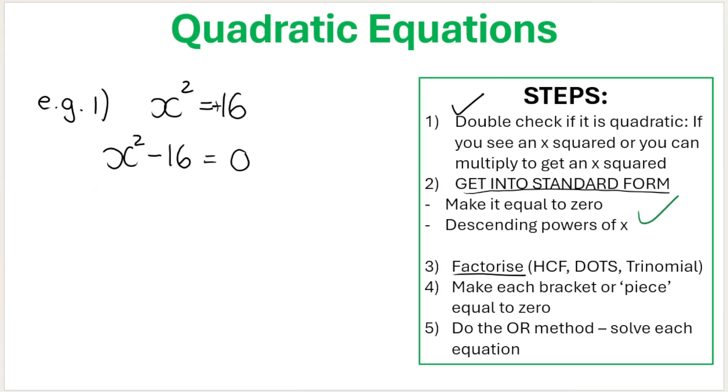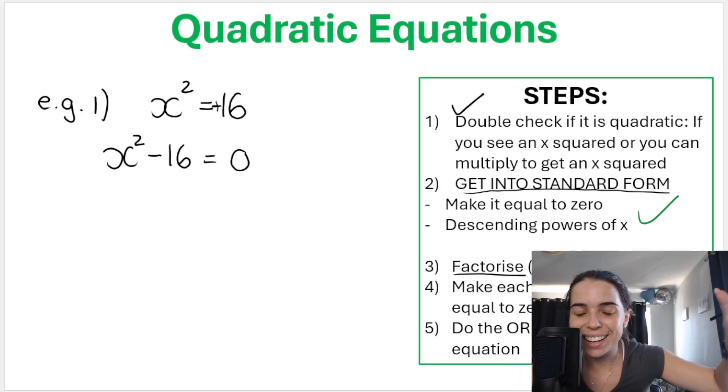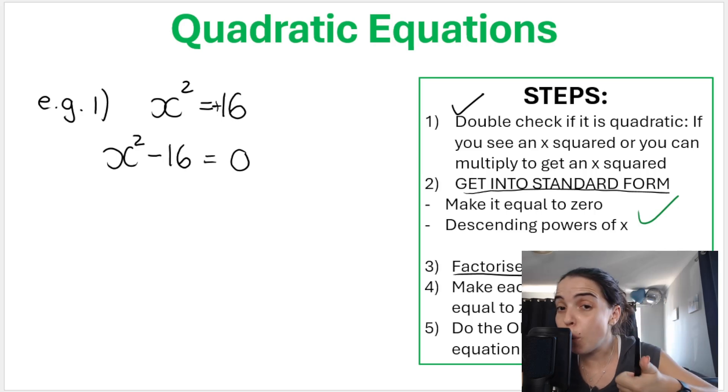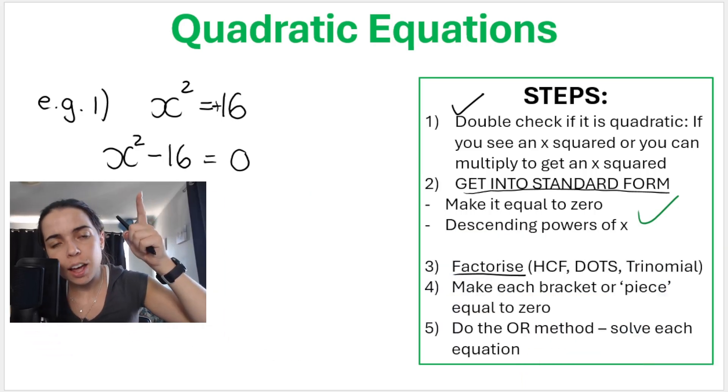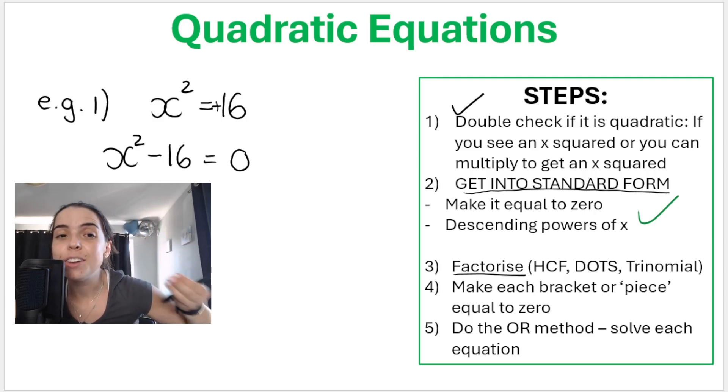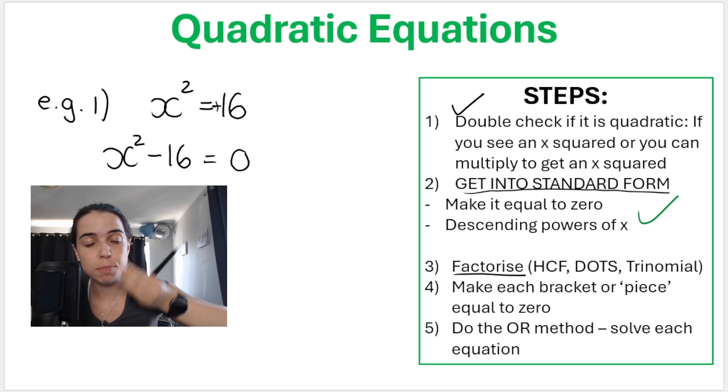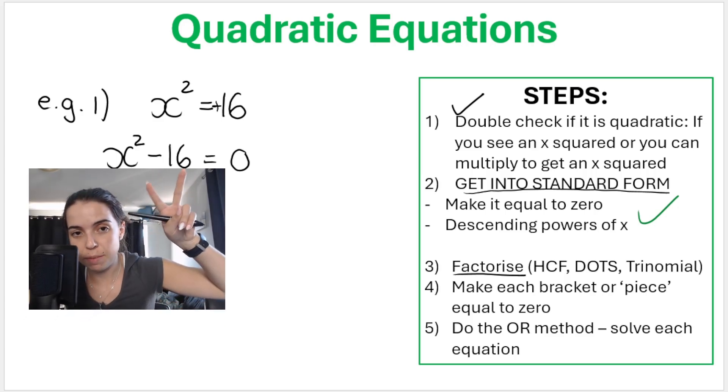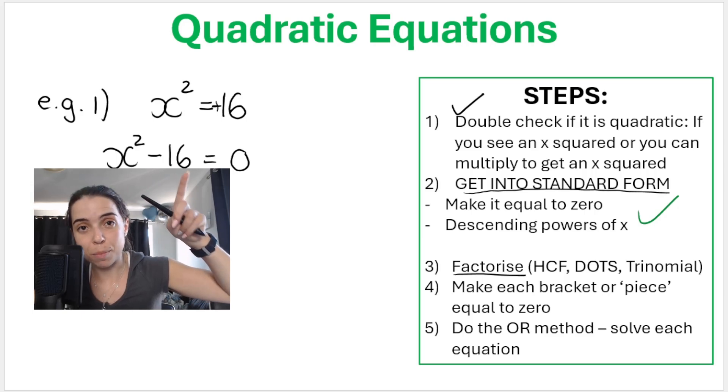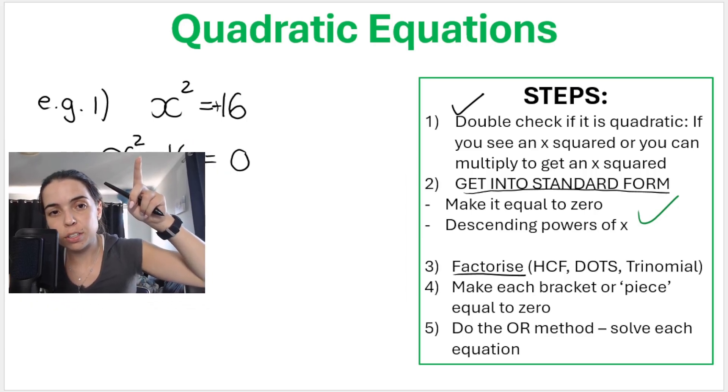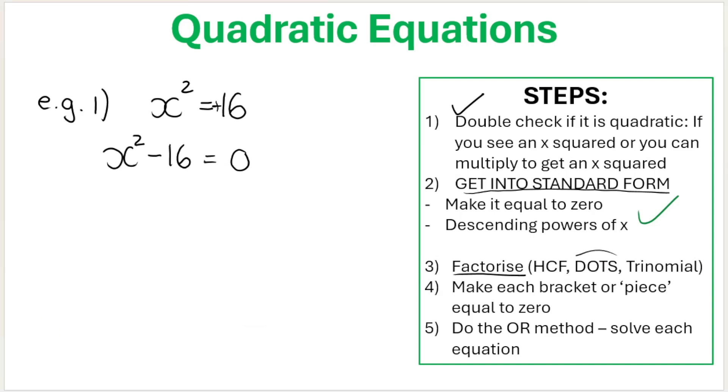Then the third step is to factorize. So this is where you have to think back about how to factorize. Now, you should remember that we can do highest common factor. That's the most important type. You need to always try that first. Can I take out a highest common factor here? No. Then try difference of two squares, difference between two squares. You need two terms. There's two terms here. A minus in between square numbers. I can square root 16 and even exponents. Two is an even number. So here I can do difference of two squares in this particular example. And when you factorize this, you're going to get x plus 4, x minus 4. If you need help with factorizing, I'll link the factorizing playlist below. It's very important that you know how to factorize to do quadratic equations.